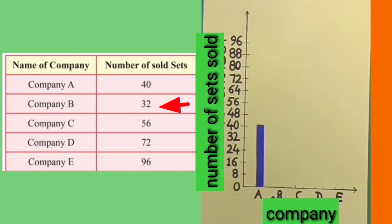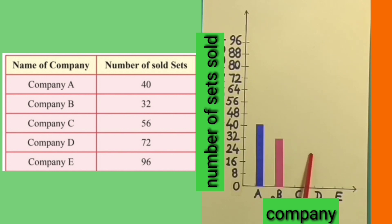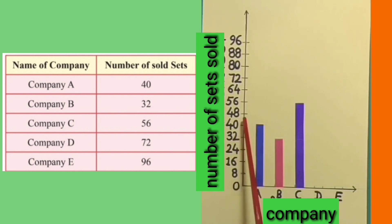Company B sold 32 mobile sets. To represent it on this bar graph, we will draw a rectangular bar from 0 to 32 at the level of 32. We have now drawn a rectangular bar representing the number of sets sold by company C as well.